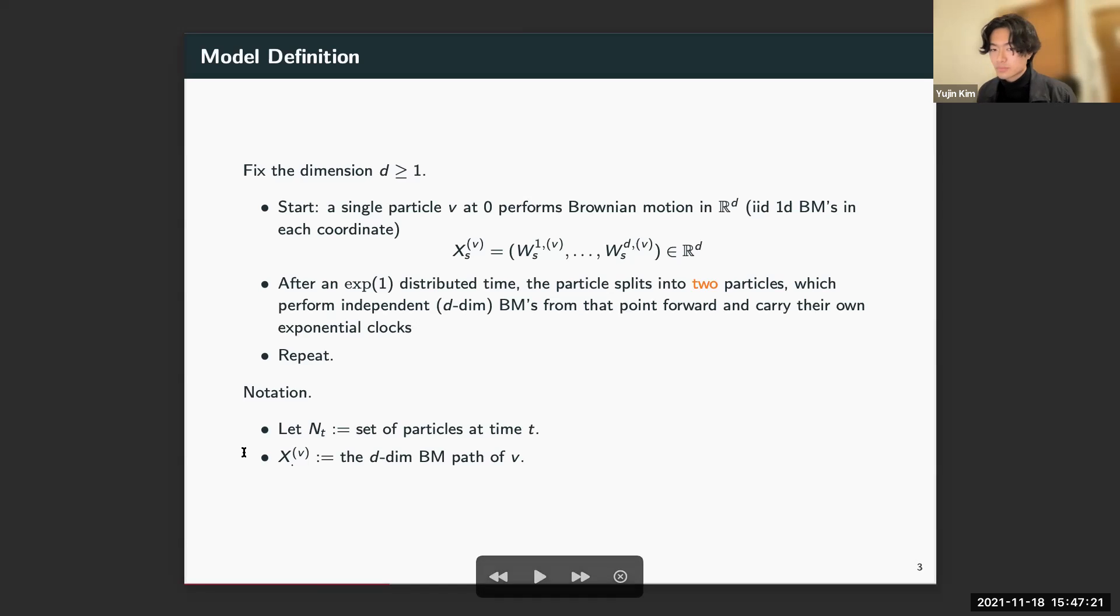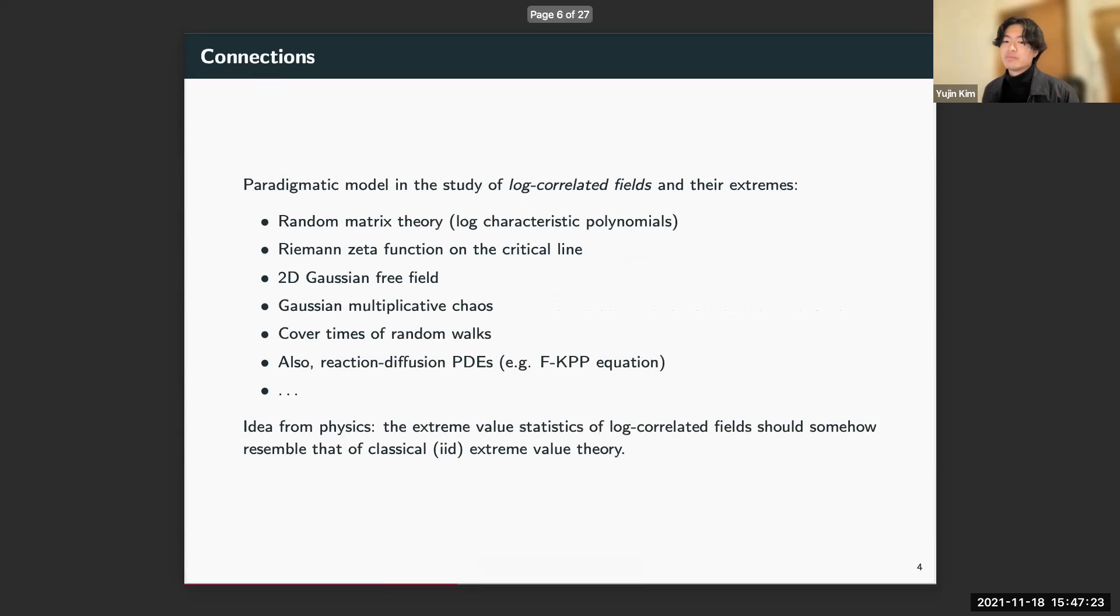To motivate the study of branching Brownian motion, I want to mention that BBM has served as an important model in the study of log-correlated fields, especially in their extrema. On the screen I've listed some of the areas that have been informed by BBM. An important idea from physics underlying this whole study is that the extrema of log-correlated fields should resemble the well-understood extrema of IID random variables, which follow the classical extreme value distributions.